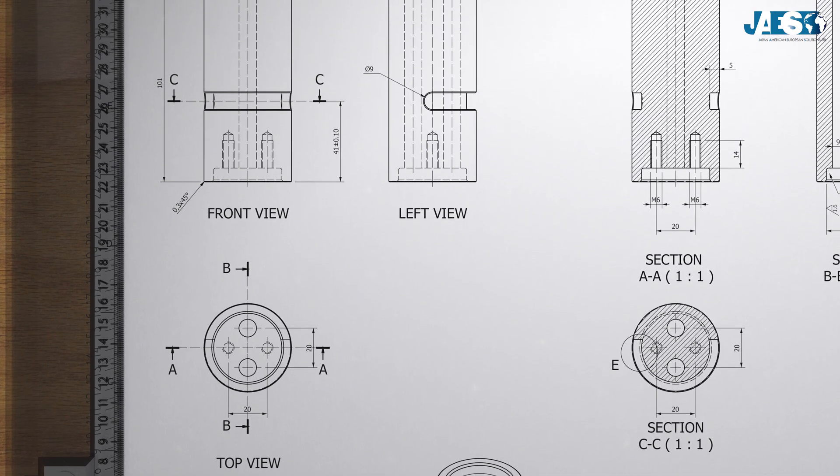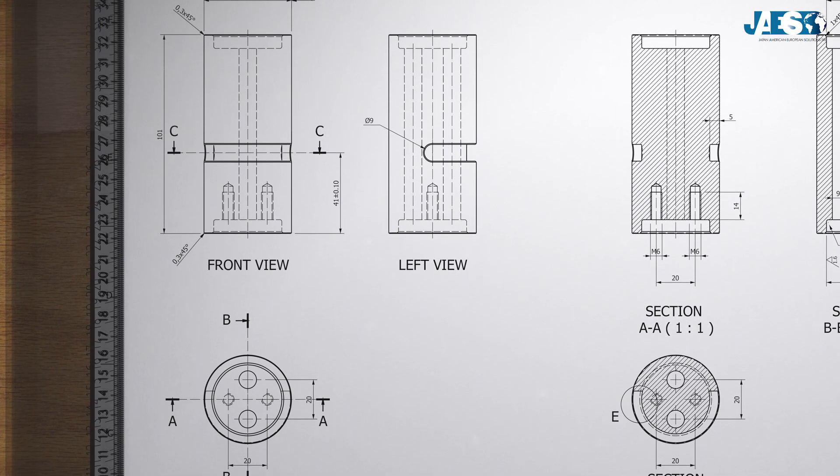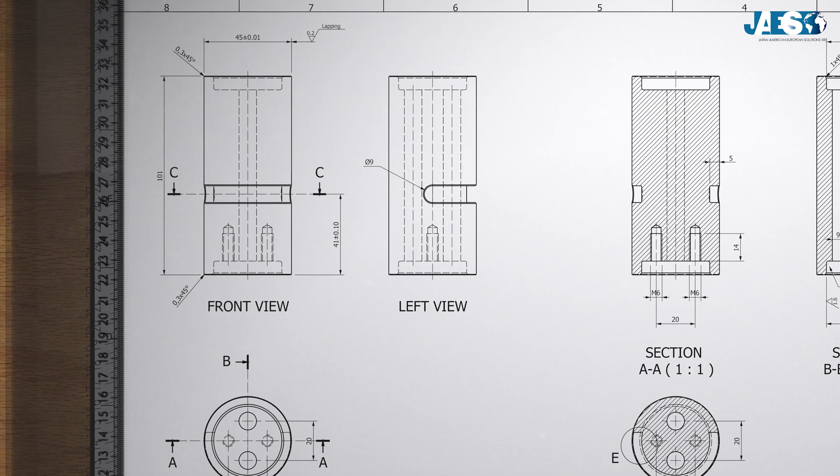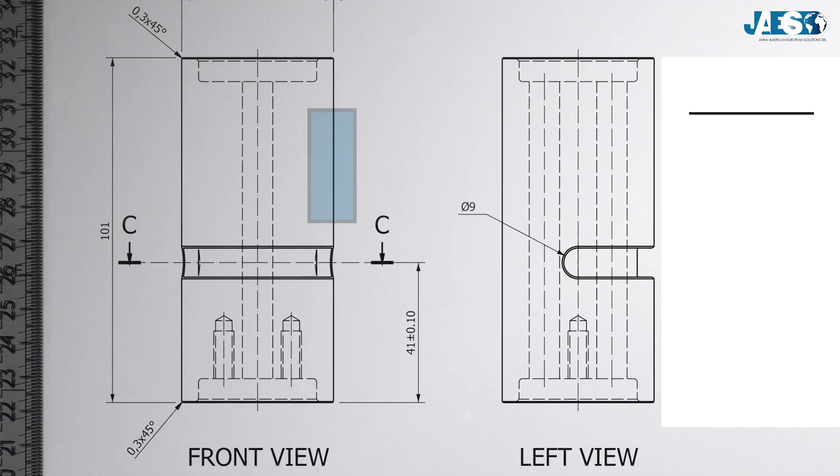As we can see, it is made up of different lines of different thickness, continuous or dashed. Each one has a meaning. The thick line defines all the contours and edges that can be seen in that view, while the dashed line shows those that cannot be seen in that particular view.